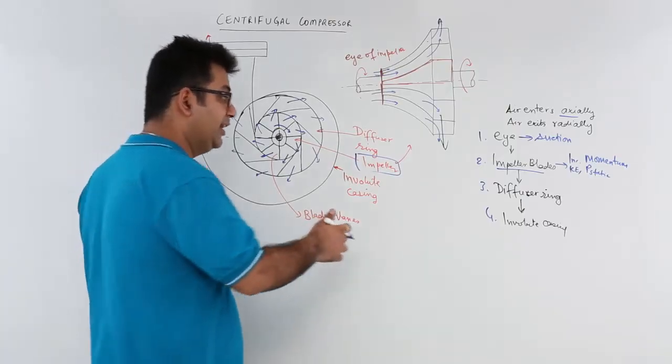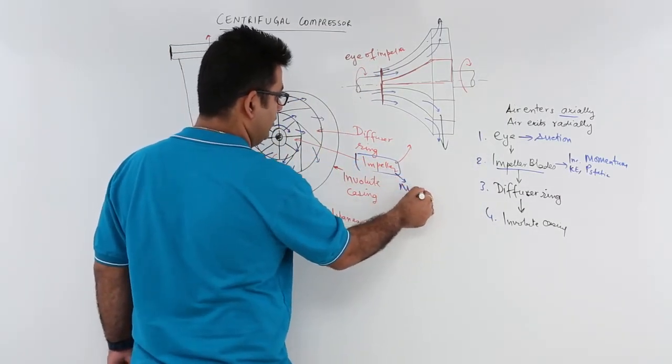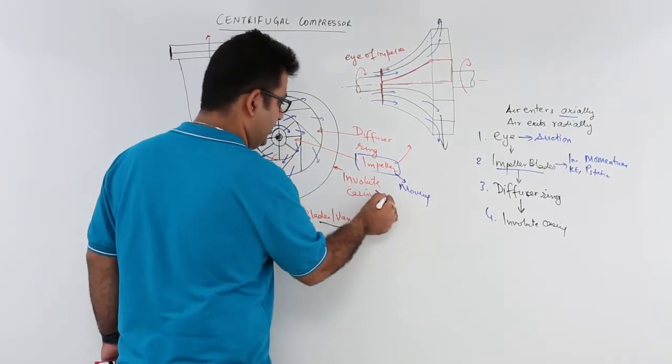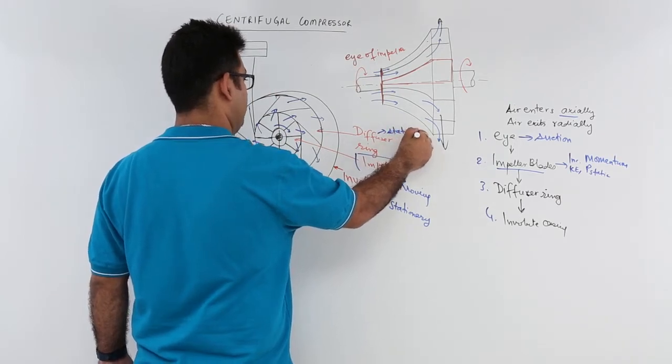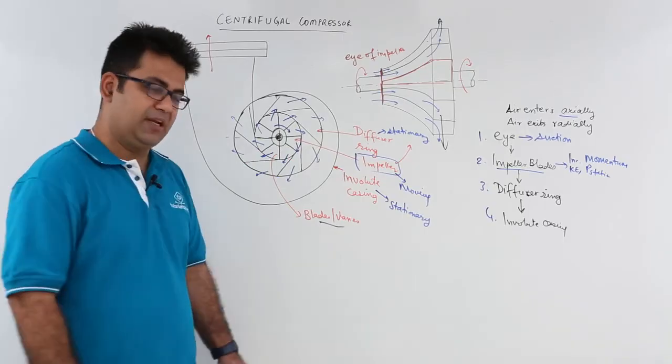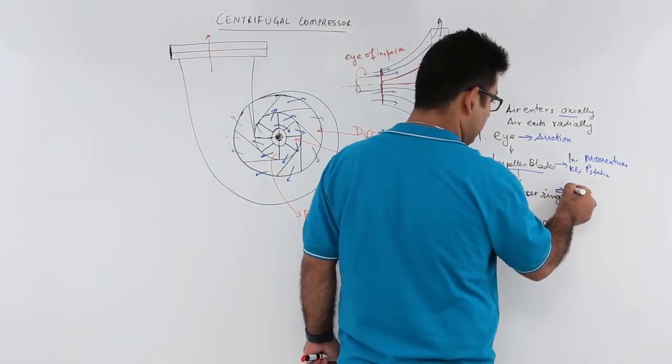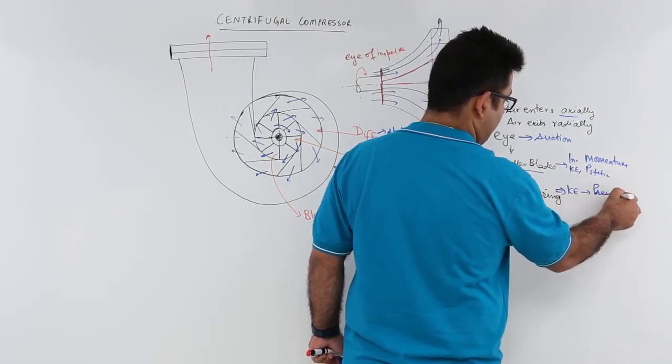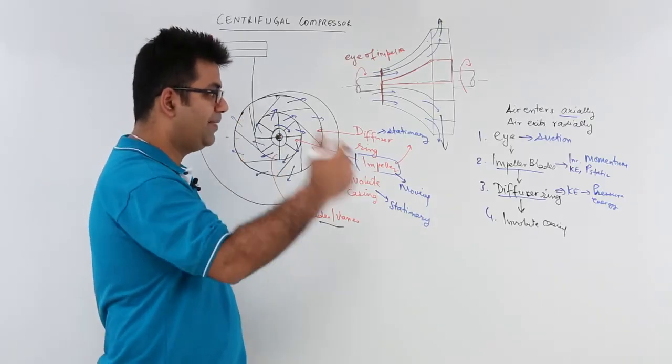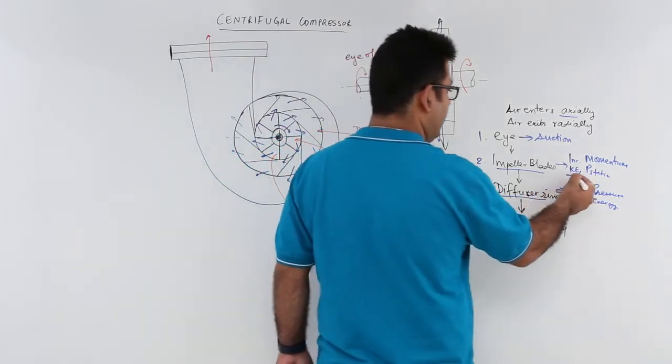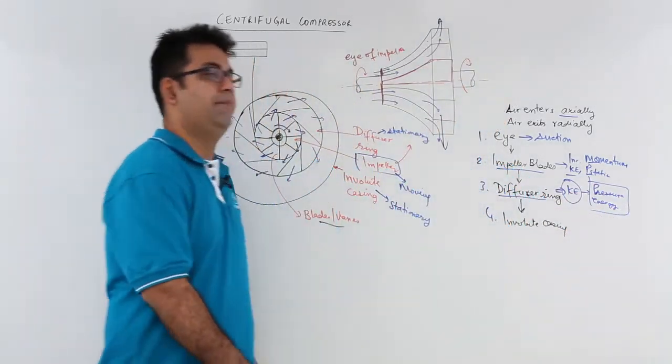Now from this impeller, they are taken into the diffuser ring. Now diffuser ring is static. So this impeller, this is a moving part, this is rotating. This is a stationary part, and so is this diffuser ring. So in the diffuser ring what is happening? All this kinetic energy, all this momentum is broken down, and this kinetic energy is now transformed into the pressure energy. So the pressure increases in the diffuser ring. It is not increasing in the impeller blades or the impeller. Impeller just imparts the energy which increases the velocity, the momentum, and the static pressure. And all this high energy is taken into the diffuser, where this high kinetic energy converts into high pressure energy.